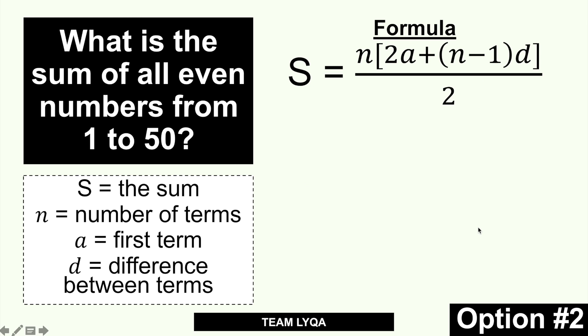The second option is a formula — actually more involved than the one from our first video in this series, but this is the proper formula for this type of question. You can even use it for questions like: what is the sum of all even numbers from 150 to 300? The formula is: S = N/2 × (2A + (N−1)D), where N is the number of terms and A is the first term.